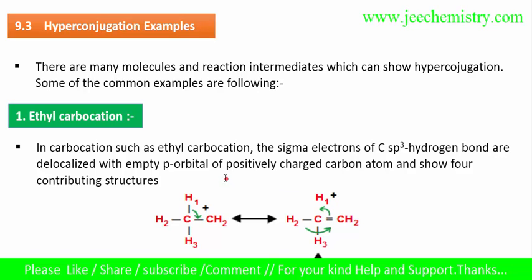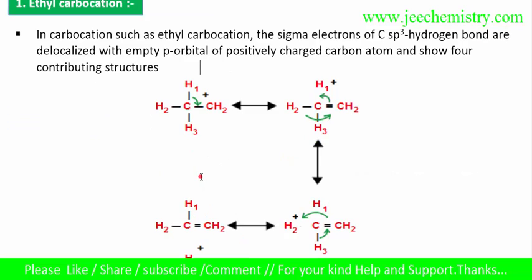Now we will learn some examples of hyperconjugation. Examples will make our knowledge more perfect. This is ethyl carbocation. Ethyl carbocation can also show hyperconjugation. The carbocation, free radicals, and unsaturated systems can also show hyperconjugation.